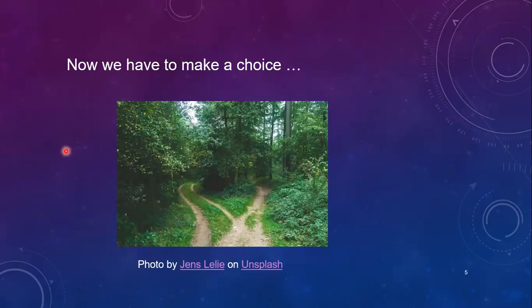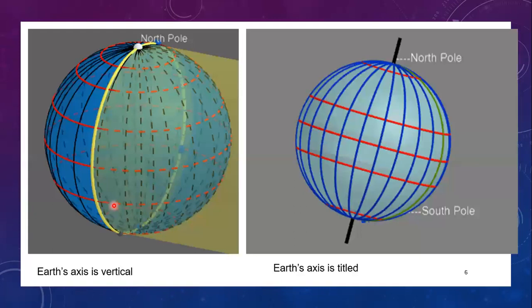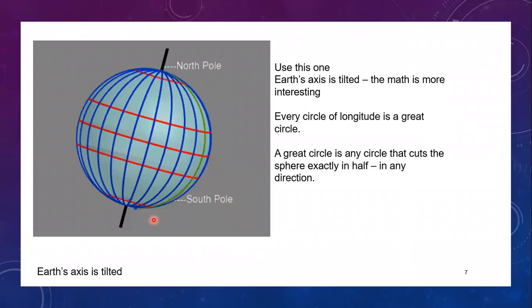We had to begin by making a choice. We have to choose whether we want to think of the earth as being on a slope or tilted, the way it usually is if you have a globe in your house or classroom, or whether it's straight up and down. We chose to go with the tilted option here because the math is more interesting, and later on in some subsequent videos, it may be useful for us to have done it that way.